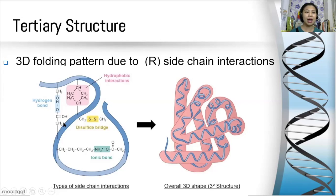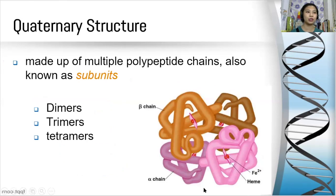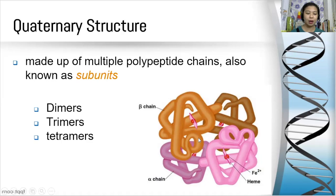However, there is one special type of covalent bond that contributes to the tertiary structure, called the disulfide bond. The disulfide bond acts as a safety pin, keeping the parts of the polypeptide firmly attached to each other. Lastly, we have the quaternary structure, made up of multiple polypeptide chains also called subunits. We have dimers consisting of two peptide chains, trimers consisting of three polypeptide chains, and tetramers consisting of four polypeptide chains. The illustration here is an example of quaternary structure — our hemoglobin — which has four polypeptides, so we call hemoglobin a tetramer.